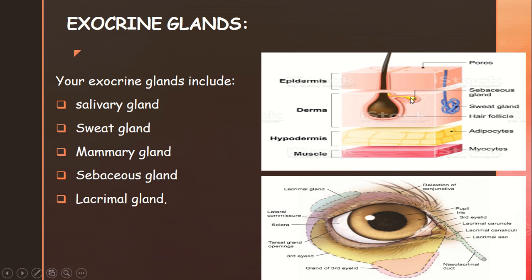Mammary glands produce breast milk. Sebaceous glands are connected to hair follicles — hair is attached to the sebaceous glands. These glands produce an oily secretion. This oily secretion moisturizes the body, reduces friction, and keeps the body protected.